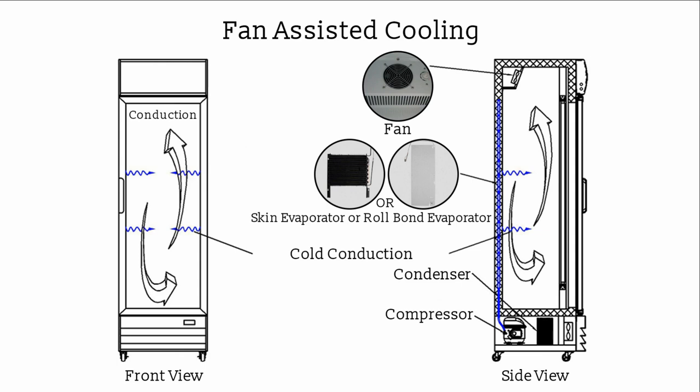The fan-assisted cooling system uses a skin evaporator inside the foaming body or a roll bond evaporator for effective cold conduction from the evaporator to the cabinet and into the surrounding air. It includes an additional fan inside the cabinet to enhance air ventilation, ensuring the even distribution of cold air for consistent temperatures in every corner. Essentially, it combines the static cooling system with an inside fan. The pull-down time to below 10 degrees Celsius is 40 minutes for an empty load and 24 hours for a full load. The price is moderately higher than static cooling, approximately 10 US dollars more.